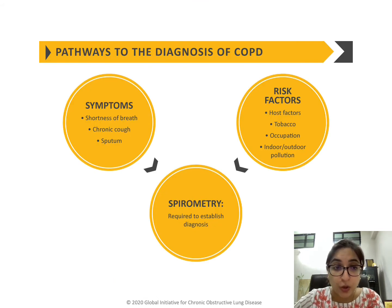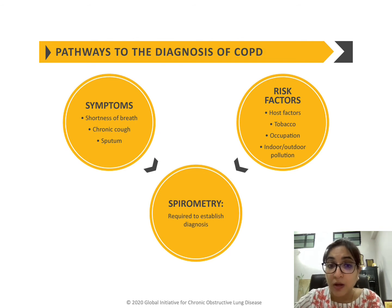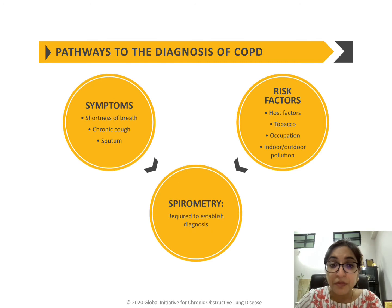To diagnose COPD, we need symptoms, host factors, and spirometry. Spirometry is very important to diagnose COPD according to standard definitions. Symptoms of COPD are similar to asthma but are persistent: breathlessness, cough, and sputum production. Classically, COPD was divided into two phenotypes — chronic bronchitis and emphysema. More recently we have additional phenotypes like asthma-COPD overlap. There may be a component with more sputum or a component with more breathlessness. Combined with host factors and environmental exposure, these can result in COPD.